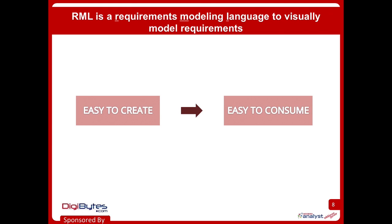RML is what I like to refer to as a toolbox of requirements. RML stands for Requirements Modeling Language and it's a group of models that are all meant to visually model our requirements. Models are most useful when they focus on only one or two aspects of a system at most. If there's too many pieces of information modeled or the syntax is complex to understand, then the model quickly loses its value.